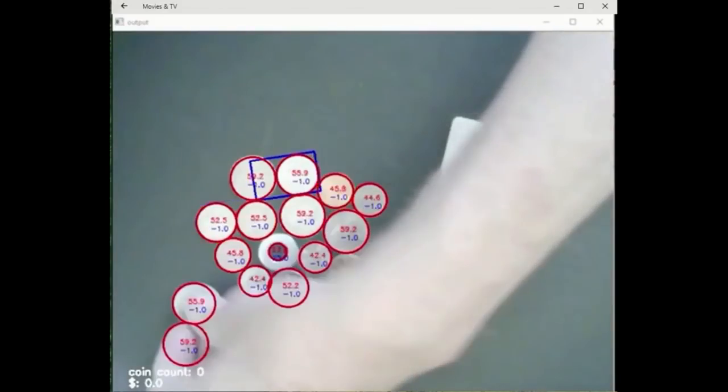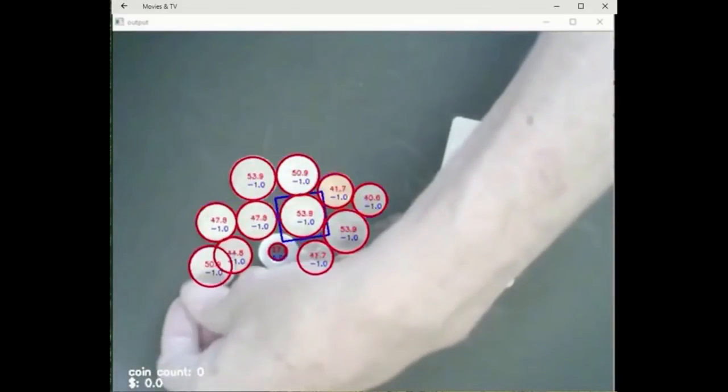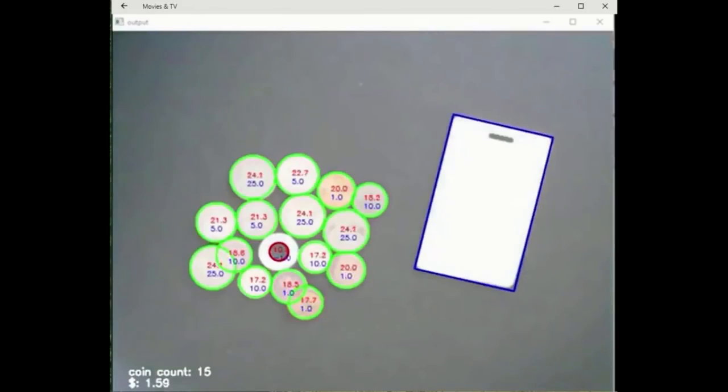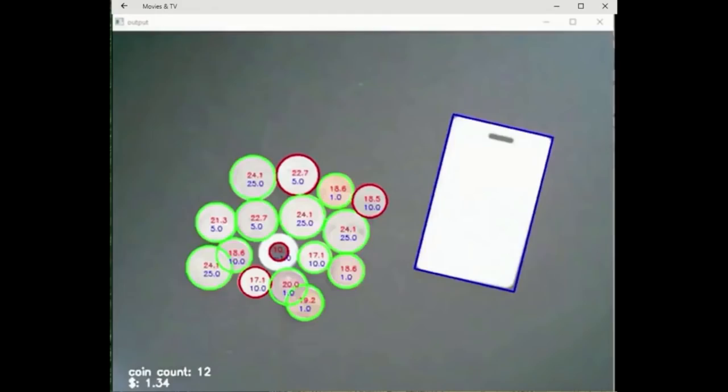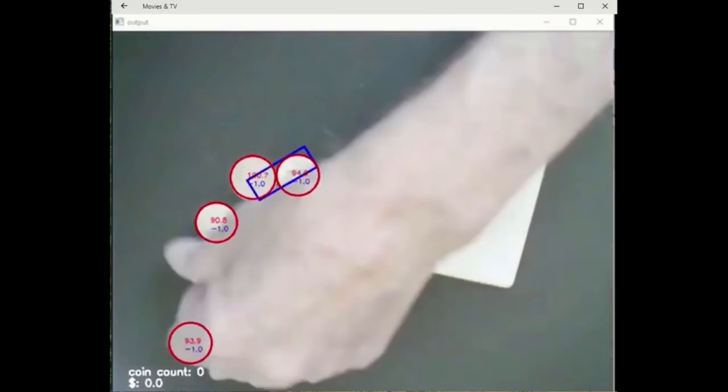Find contour is not used for coin object detection because the algorithm fails for touching and occluded coins. After detecting the ID card and calculating the scale factor, we use the Hough transform and specifically the Hough circles to detect circles. The transform is applied to the grayscale image after blurring.